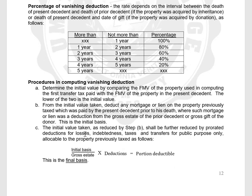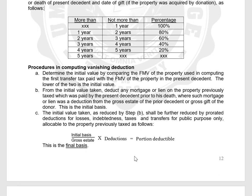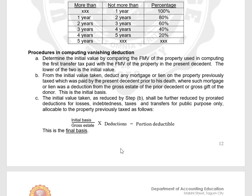The initial basis shall further be reduced by a pro-rated deduction for losses, indebtedness, taxes, and transfer for public use allocable to the previously taxed property. The formula is: initial basis divided by gross estate, multiplied by deductions (losses + indebtedness + taxes + transfer for public use) — this is the portion deductible. Initial basis minus the pro-rated deduction gives the final basis. Then determine the time interval between the death of the present and prior decedent to identify the applicable vanishing deduction rate, and multiply by the final basis.